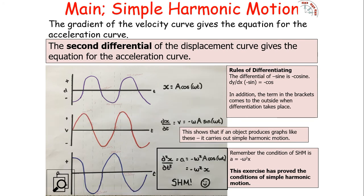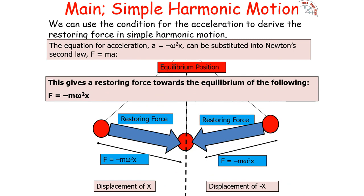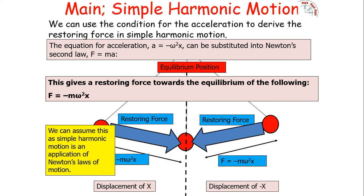We can use the condition acceleration equals minus omega squared x to find the restoring force in SHM. The restoring force always acts towards the equilibrium position. Combining Newton's second law (F = ma) with our SHM acceleration equation, we place m in front to get the restoring force equation: F equals minus m omega squared x.